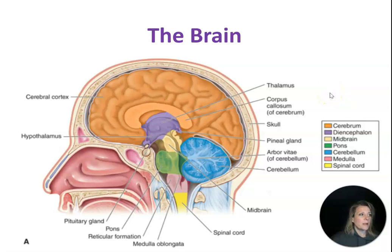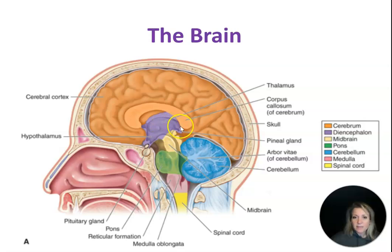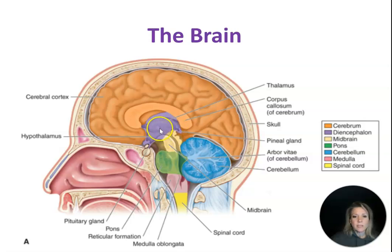The diencephalon is going to include a couple of other structures. It's going to include the hypothalamus, the thalamus, and then something called the pineal gland. So the diencephalon includes the hypothalamus, the thalamus, and the pineal gland — definitely add that to your notes.